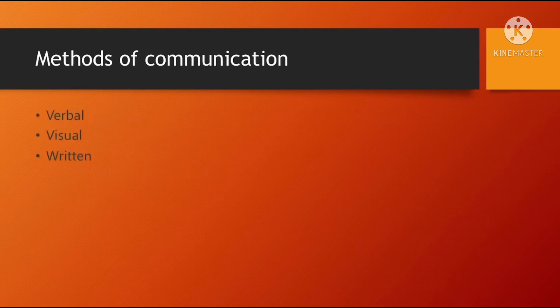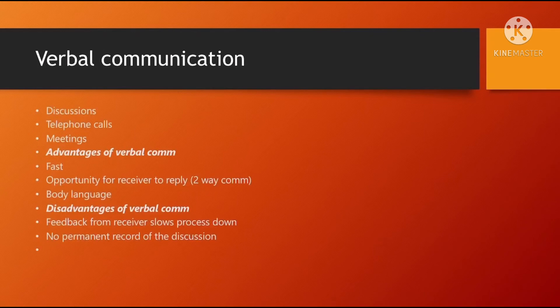There are three methods of communication: verbal, visual, and written. Verbal communication includes discussions, telephone calls, and meetings. Advantages include that it is quite fast, there is an opportunity for the receiver to reply — which is two-way communication — and you can observe the body language of the person.